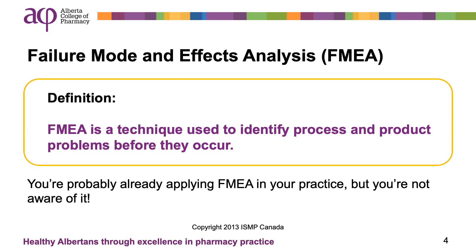FMEA is a team-based, systematic, and proactive approach for identifying ways that a process or design can fail, why it might fail, and how it can be made safer. You're probably already applying some form of FMEA in your practice, but you're just not aware of it. You might even be satisfied with your current processes because nothing bad has happened yet. But the key is to prevent accidents or errors waiting to happen by actively improving your current processes.